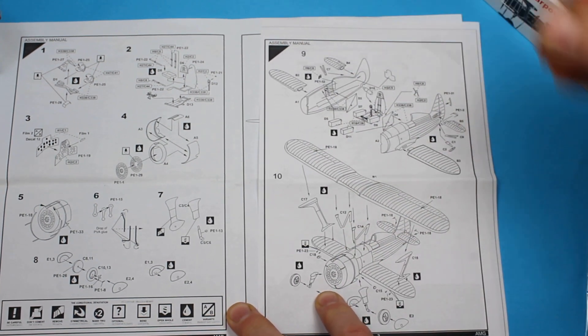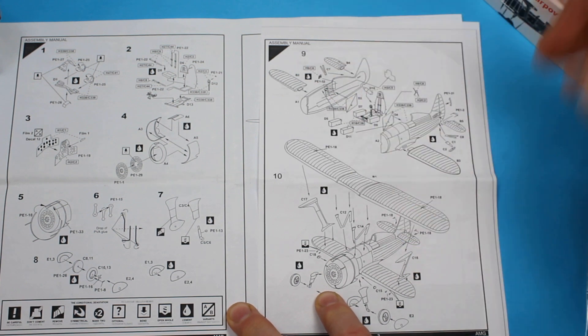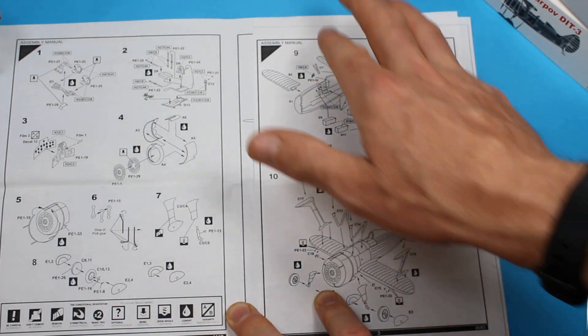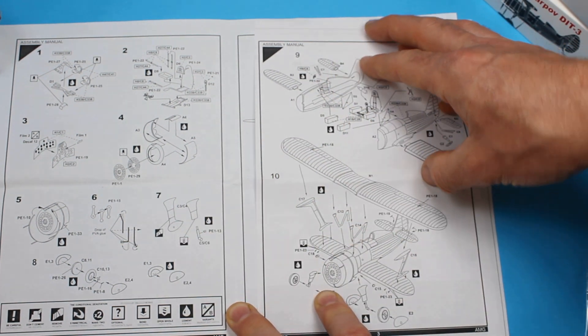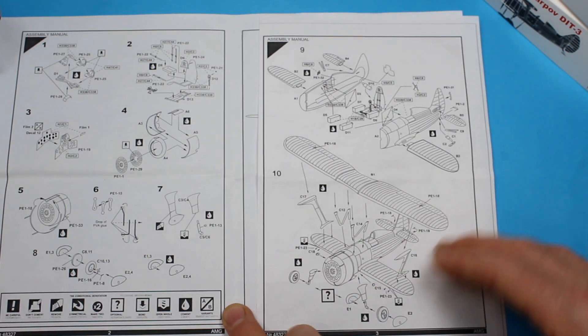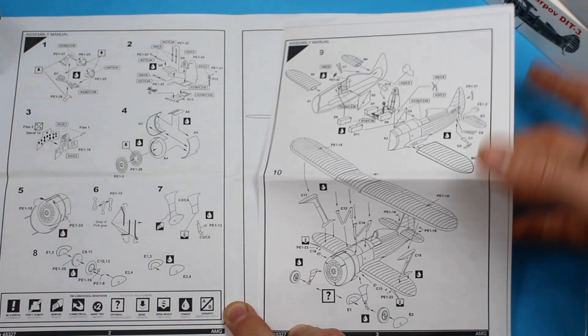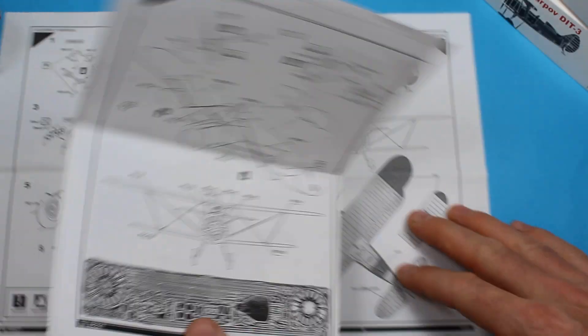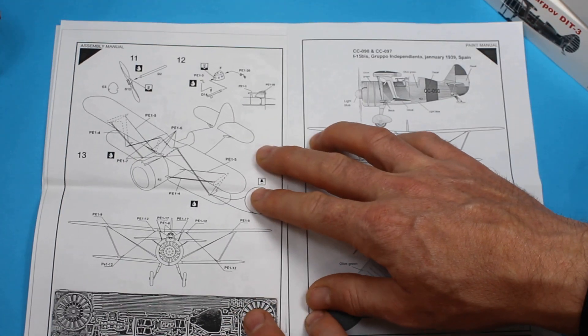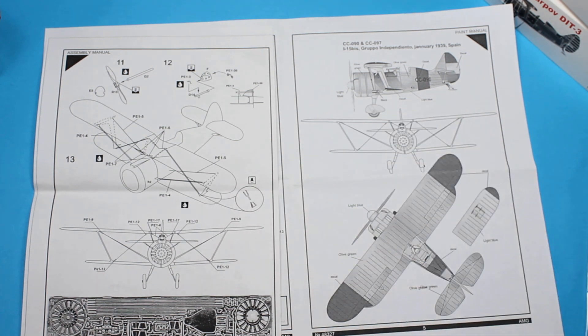You've got the fuselage halves coming together clamping in the cockpit, lower wings going on, horizontal stabilizers going on. Then we're straight into struts with the top wing going down, gear legs going on with the spats that you'd want on this, and then rigging and finishing off with a propeller.